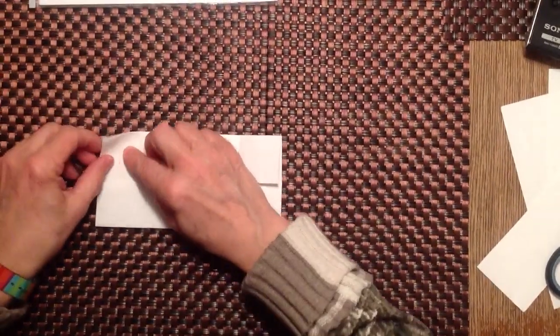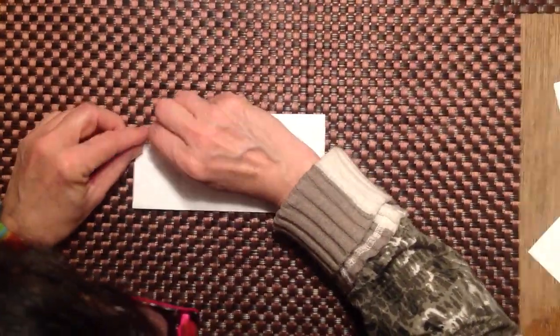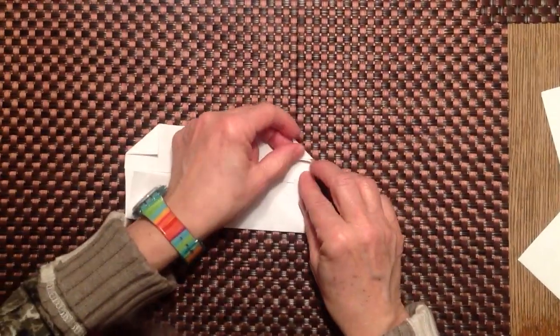Now we're going to make small triangles. It's really important that there's small triangles on each corner.